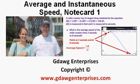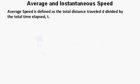Average and instantaneous speed. Note card number one. Average speed is defined as the total distance traveled D divided by the total time elapsed T.